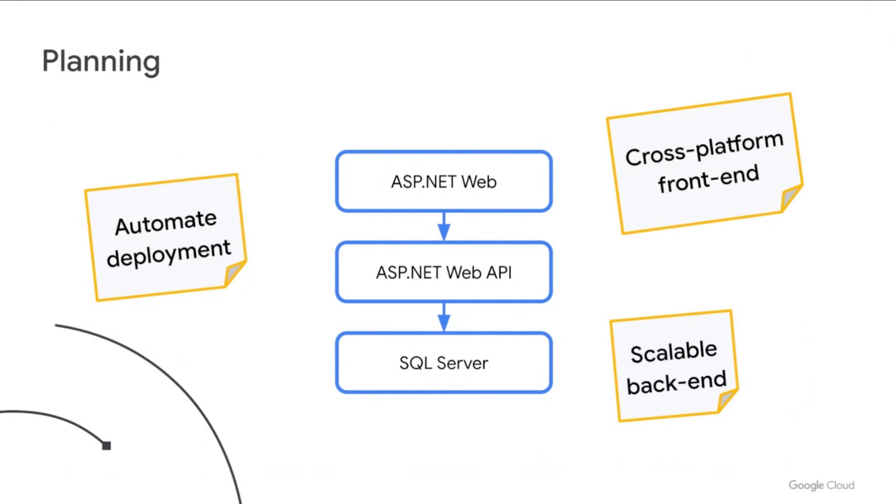We wanted to make sure that the front-end was cross-platform to run on Windows in-store kiosks. We also wanted to transform the application into an architecture that could scale efficiently, making the most of cloud-native services. And automating the build and deployment was very important to us, as it would help us spend more time on the code itself.